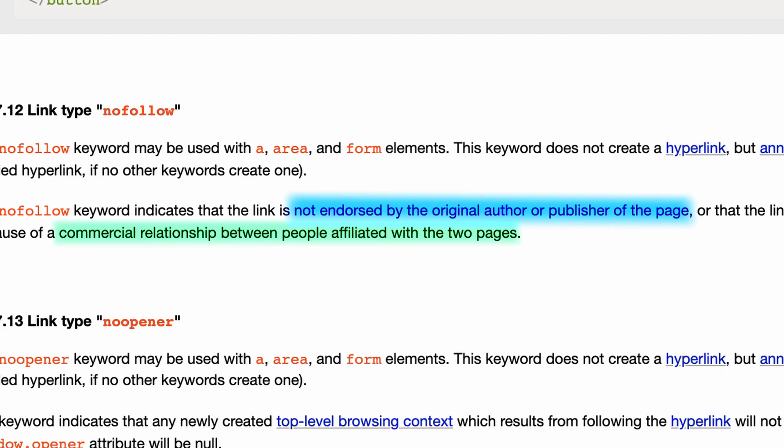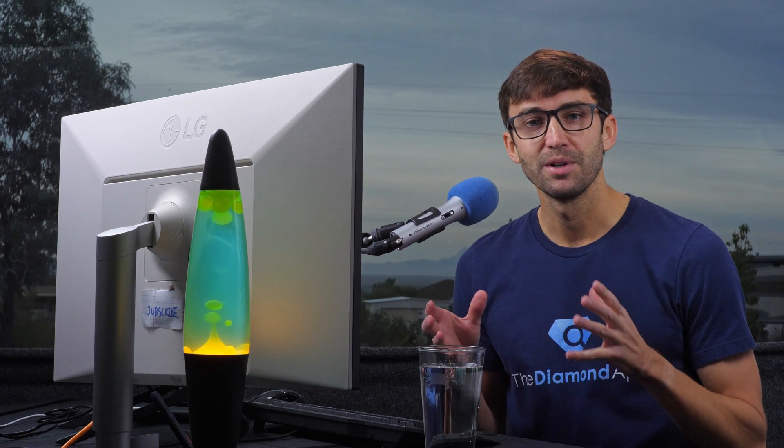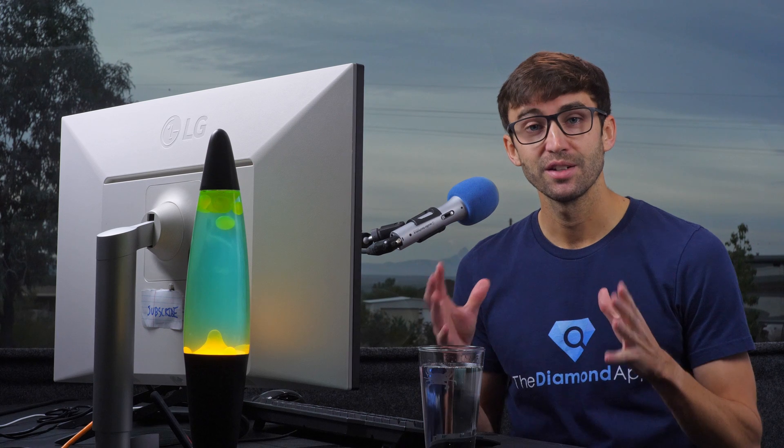So the second half of this about the commercial relationship makes sense, but in my opinion, the meaning of endorsement is unclear. Thankfully, John Mueller, who is pretty much one of the faces of SEO at Google, clarifies what endorsement means in this case.